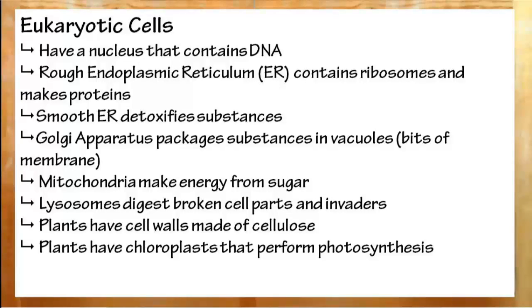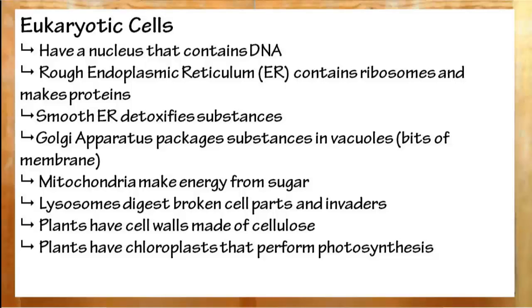Eukaryotic cells have a nucleus, which contains all the DNA, and also an endoplasmic reticulum. Rough ER produces proteins. Smooth ER detoxifies things. Things produced by the endoplasmic reticulum usually go to the Golgi apparatus, which are packaged in vacuoles and sent off to other parts. The eukaryotic cell also contains mitochondria to produce energy from sugar and lysosomes to digest things, including broken down cell parts and bacterial viruses. Chloroplasts are found pretty much only in plant cells and produce with photosynthesis. Plant cells also have a cell wall made up of cellulose.